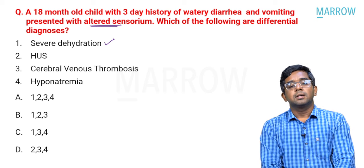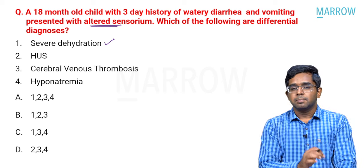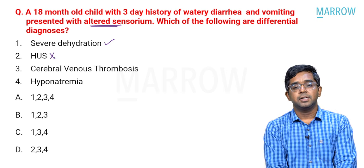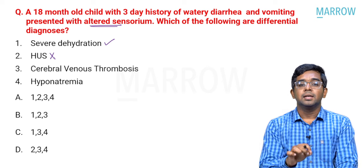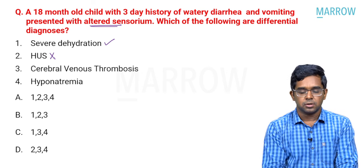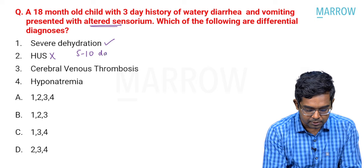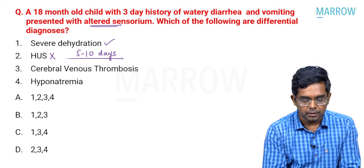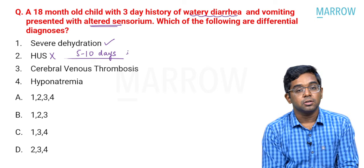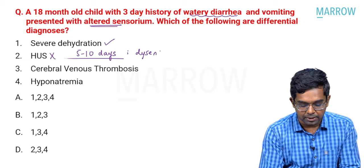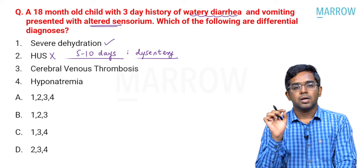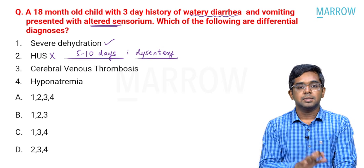Next is HUS, or hemolytic uremic syndrome. Please remember, HUS is not a possibility here — it is very unlikely because this is not something which occurs with acute diarrhea. It is a post-gastroenteritis or post-diarrheal condition, usually occurring 5 to 10 days after the diarrhea. Not only that, it is not usually watery diarrhea — it is usually in the setting of dysentery or bloody diarrhea. Both those criteria are not satisfied, so I would not consider HUS in this setting.